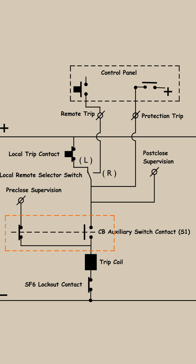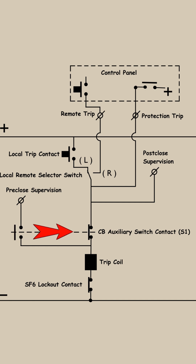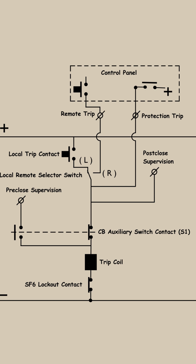From the tripping circuit, we can clearly see that there are two conditions to be fulfilled for tripping of the circuit breaker. One is that the circuit breaker must be in the closed position. If the circuit breaker is in the closed position, then only this auxiliary switch contact will also be in the closed position — this normally open (NO) contact of the auxiliary switch is in a closed condition. And if the pressure of the SF6 gas in the circuit breaker is above the lockout pressure, then the SF6 lockout contact will also be in the closed position.